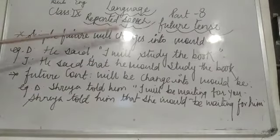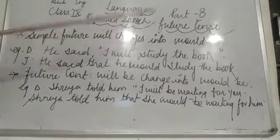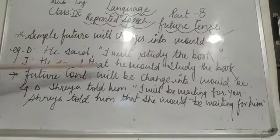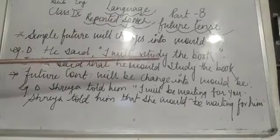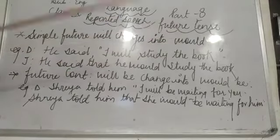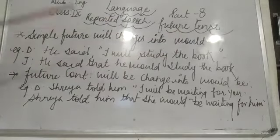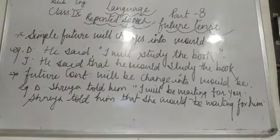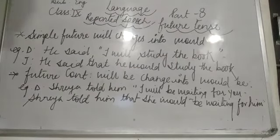To recap: simple future 'will' changes into 'would,' and future continuous 'will be' is changed into 'would be.' In the next video you will get to know about more rules of indirect speech and direct speech. Till then, thank you.